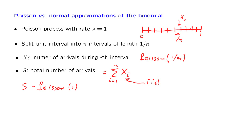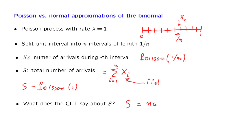So we are in a situation where we could apply the central limit theorem. We have a sum of many independent, identically distributed random variables. And by letting n go to infinity, the central limit theorem appears to tell us that S is going to be normal. But how can we reconcile these two facts? We know that the Poisson distribution is not the same as a normal distribution.